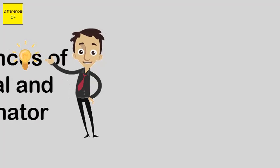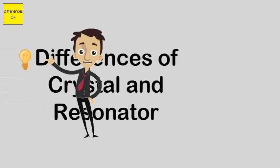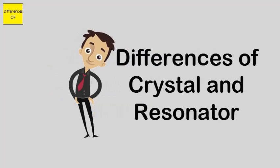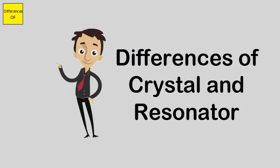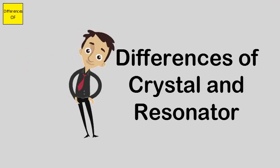Difference between crystal and resonator: crystals come with a small tolerance of 30 to 50 ppm, whereas resonators come with a tolerance of one percent of the nominal frequency.